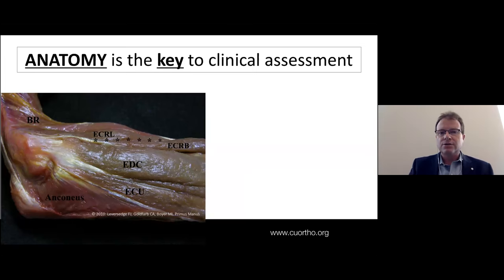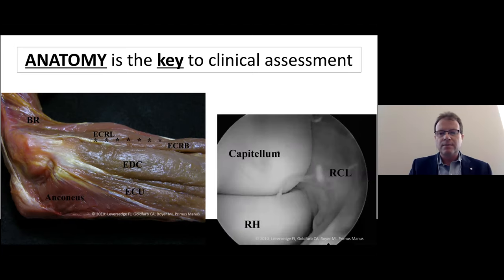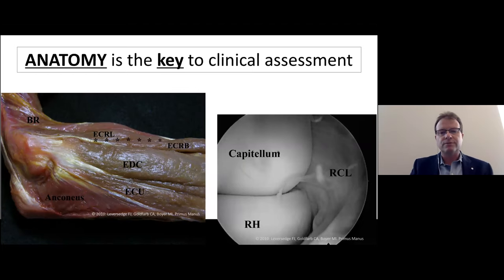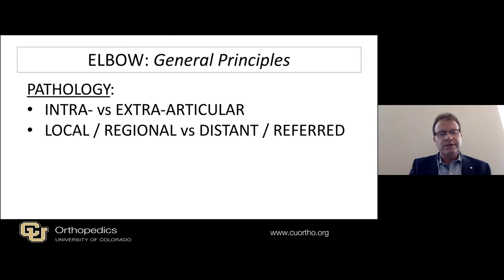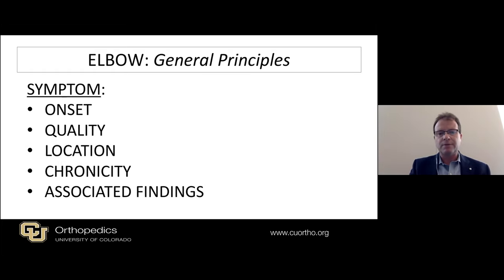Anatomy is really the key to clinical assessment of the elbow. Critically understanding not just the outside, but with our sort of X-ray vision — where we put our index finger for palpation, what we appreciate in terms of joint effusion, and the location of primary complaints — guides our diagnostic workup including imaging and testing. We really break down elbow pathology in terms of intraarticular versus extraarticular pathology, and whether the problem is local, regional, or a referred symptom coming from afar.